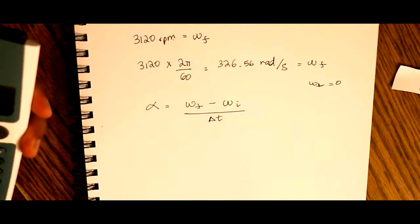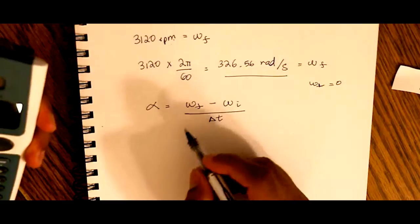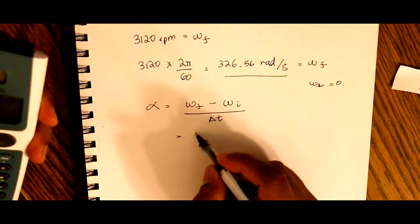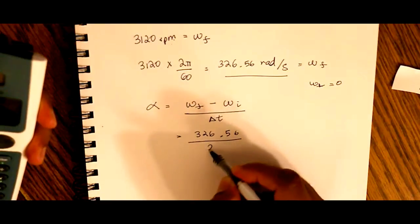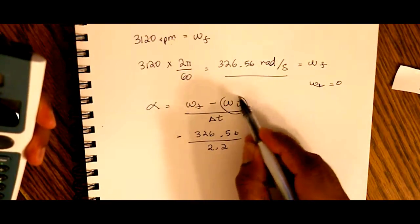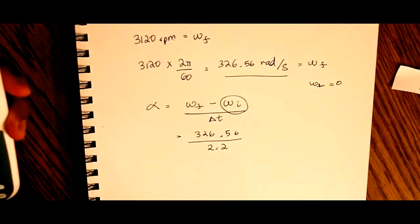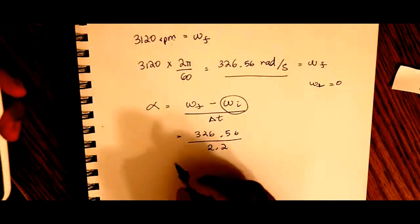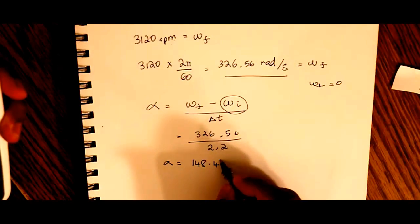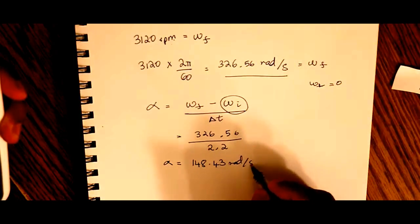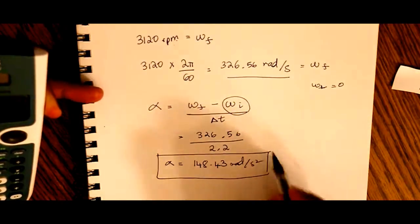It goes from zero to this in 2.2 seconds. So it essentially goes from 326.56 divided by 2.2 because our initial is zero. It started from rest. So what is that value? Angular acceleration is 148.43 radians per second squared. So we found out what our angular acceleration is.